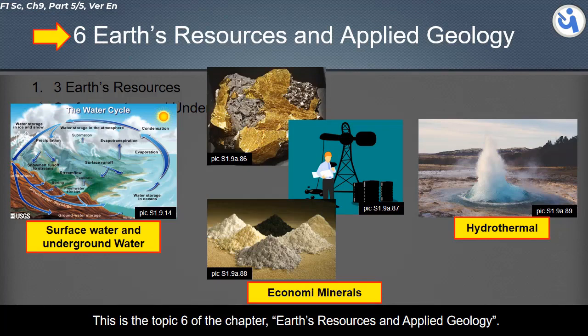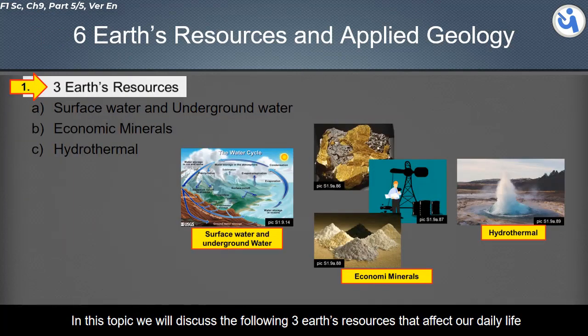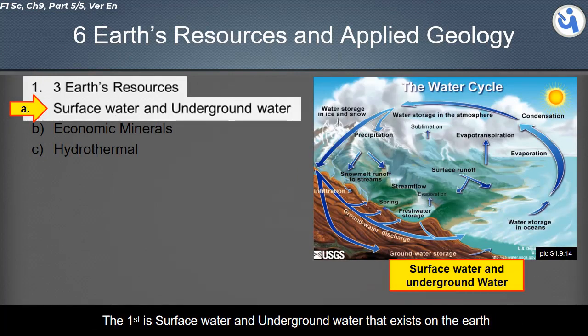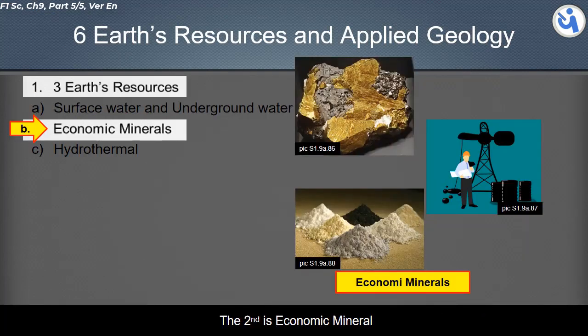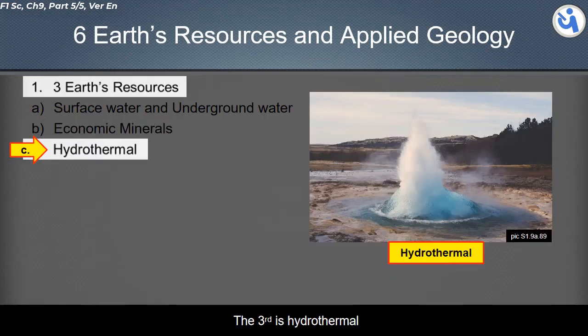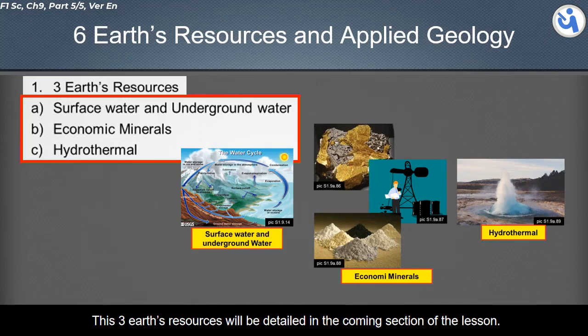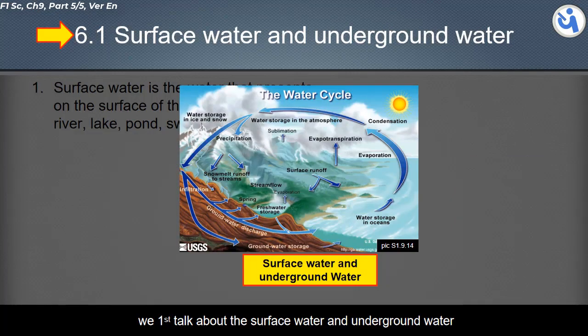This is Topic 6 of the chapter Earth's Resources and Applied Geology. In this topic, we will discuss the following three Earth's resources that affect our daily life: the first is surface water and underground water that exists on the earth, the second is economic minerals, and the third is hydrothermal. These three Earth's resources will be detailed in the coming sections of the lesson.